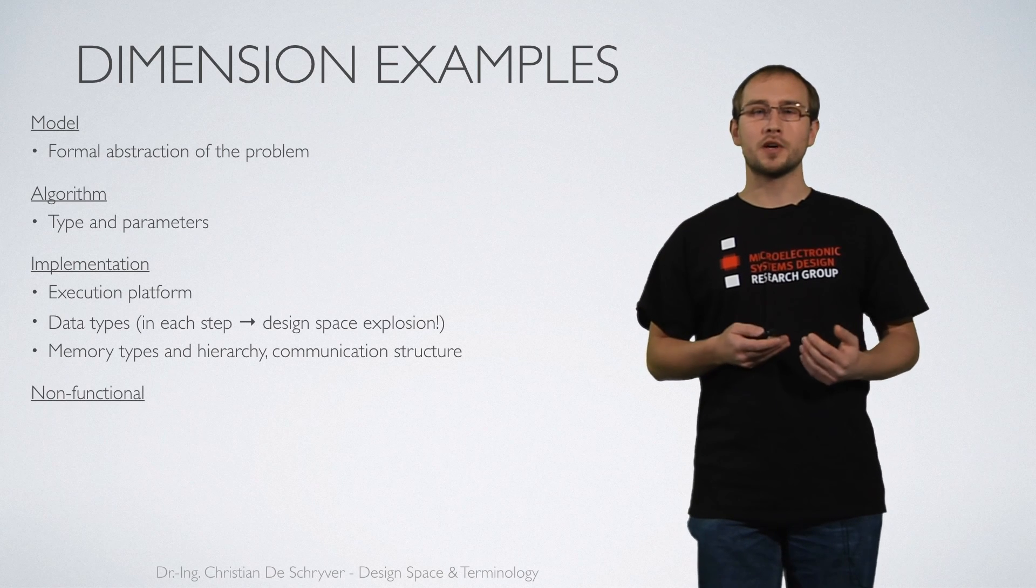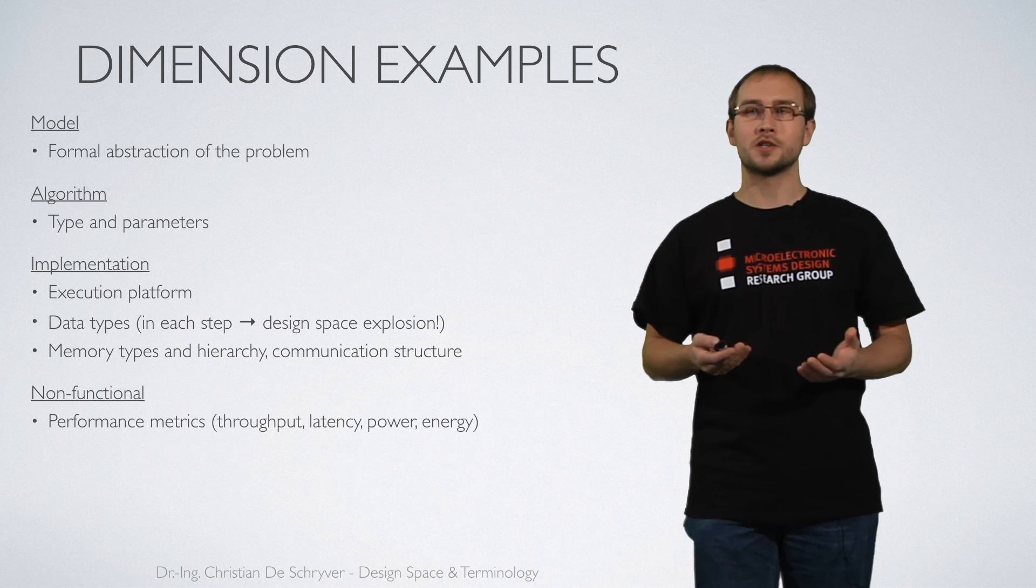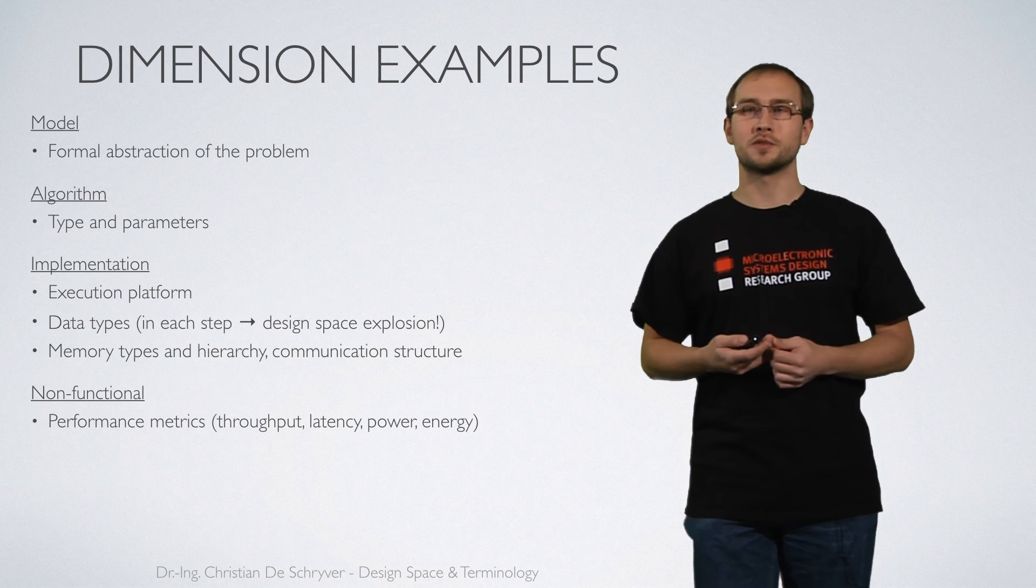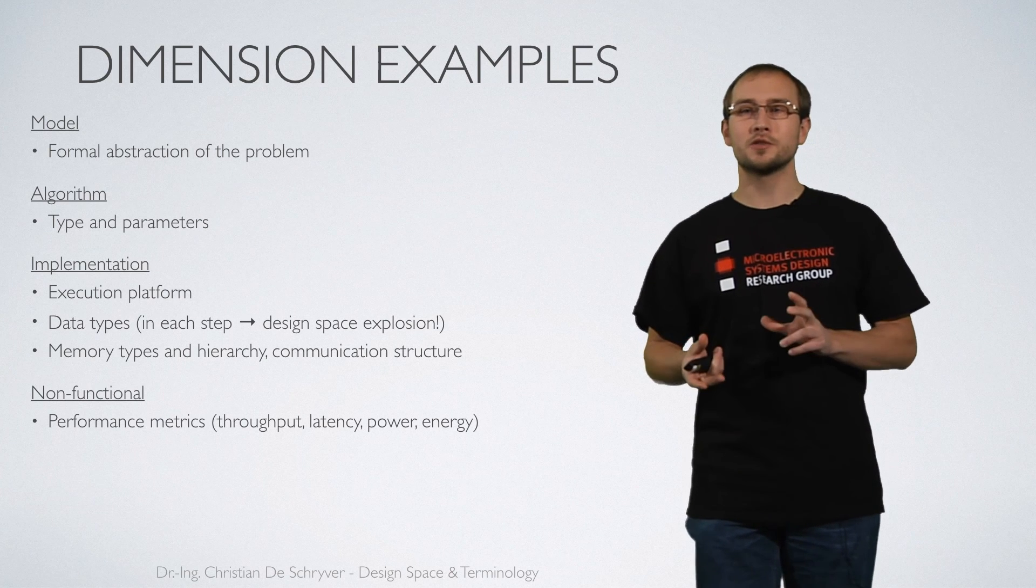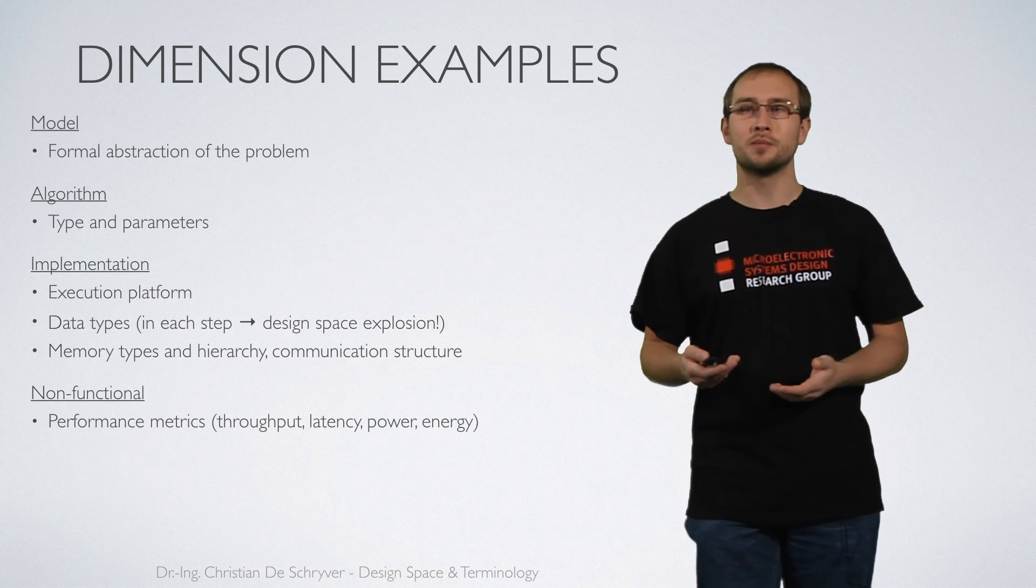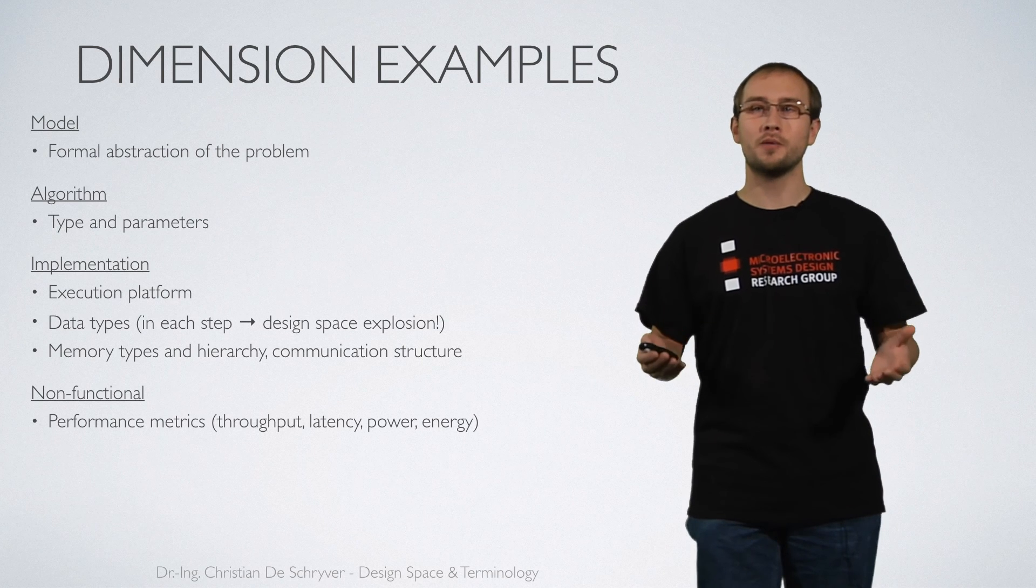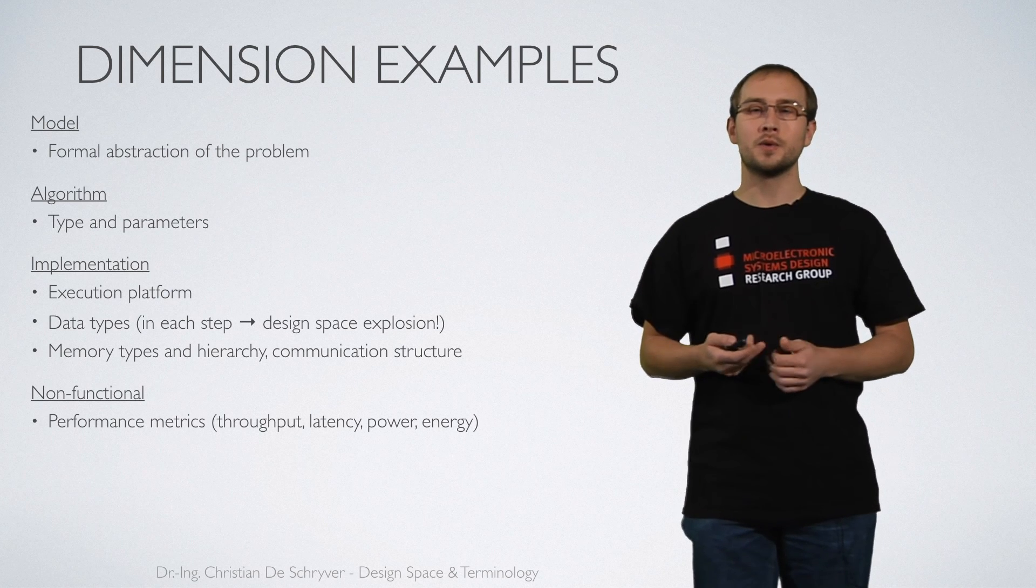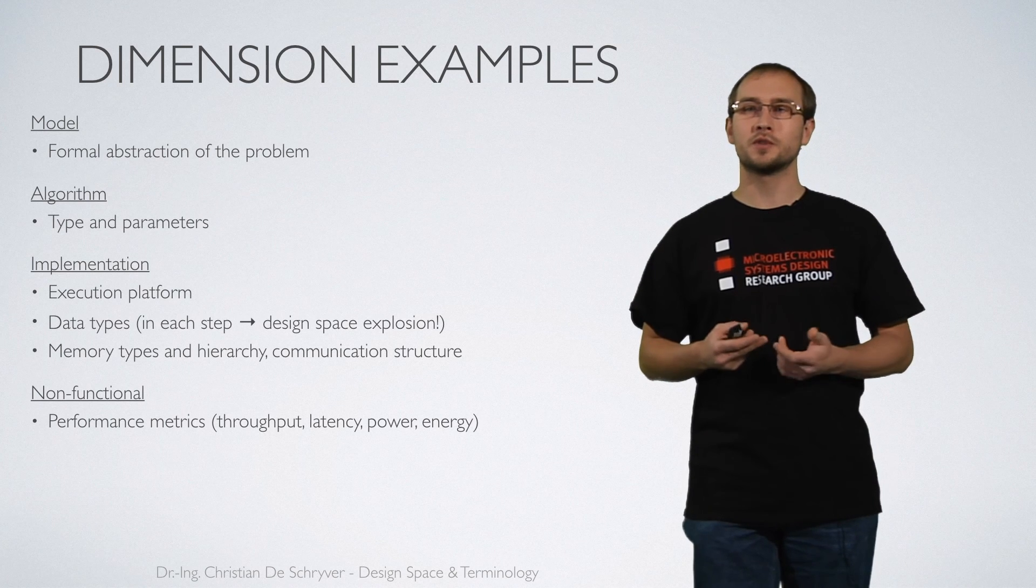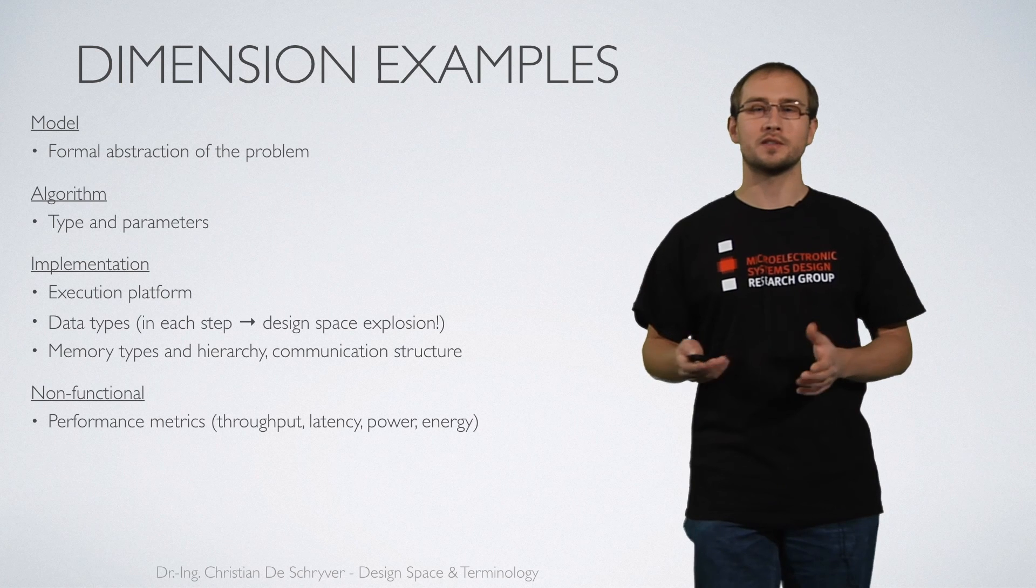But also non-functional decisions that we need to take. For example what are the performance metrics of our system? Specific design decisions can have a big impact on those metrics. For example a serial implementation is of course slower but more area efficient than a fully parallel implementation. Regarding the requirements we have with respect to throughput, latency, energy consumption we will end up with different system designs.